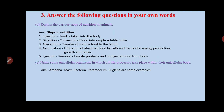The next question asks: explain the various steps in nutrition in animals. The steps are: first, ingestion — taking food inside the body. Second, digestion — conversion of food into simple soluble forms using enzymes, because the body cannot digest complex substances. Third, absorption — transfer of simple soluble food into the blood.